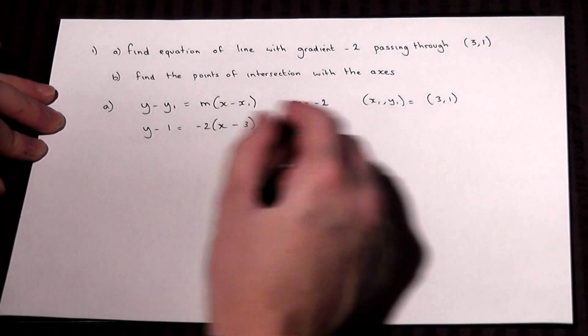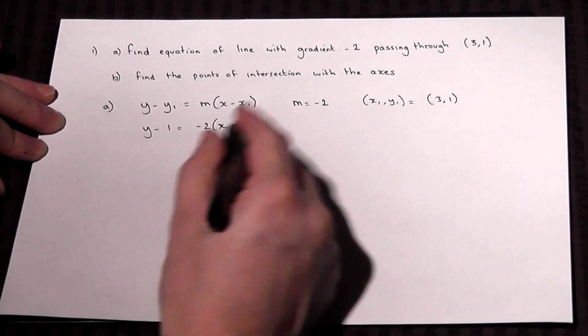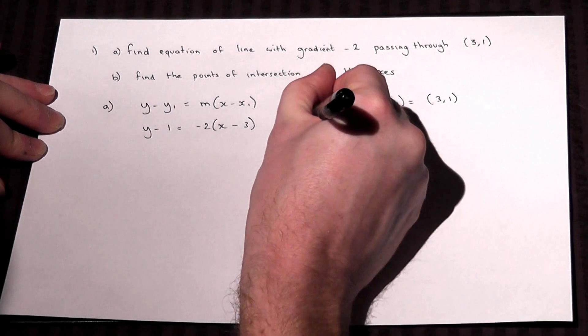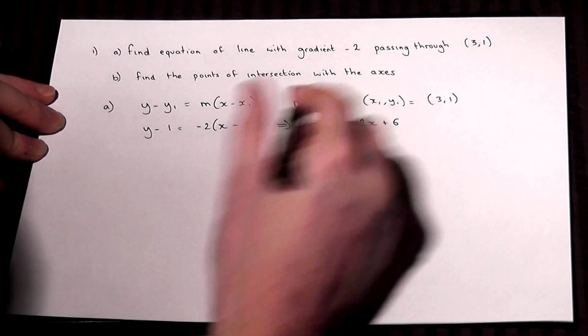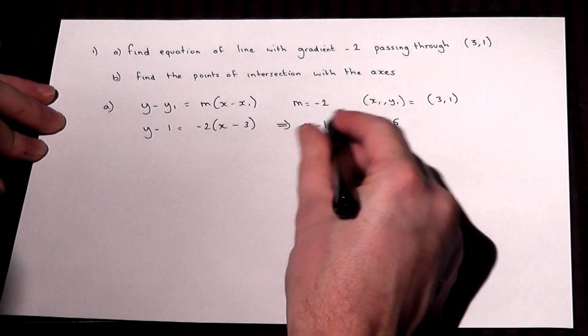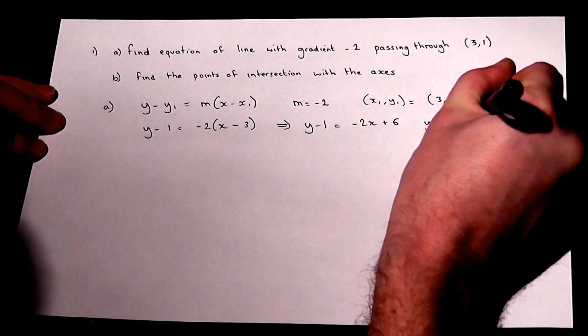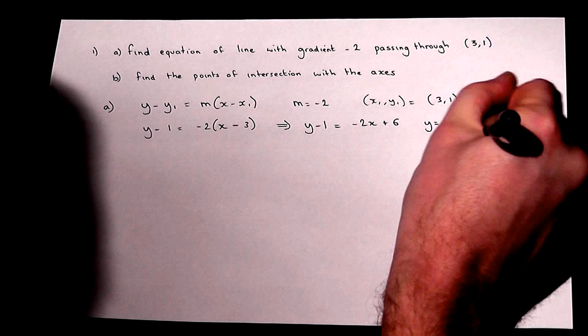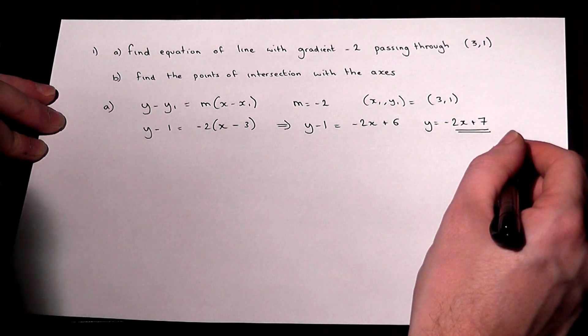This can now be expanded and rearranged to make it look simpler. So I'll expand the bracket first. y minus 1 will equal minus 2x plus 6. Two negatives go to a positive when times together. If I now add 1 to the other side, y would equal minus 2x plus 7. So that is the equation of the line in the form y equals ax plus b.